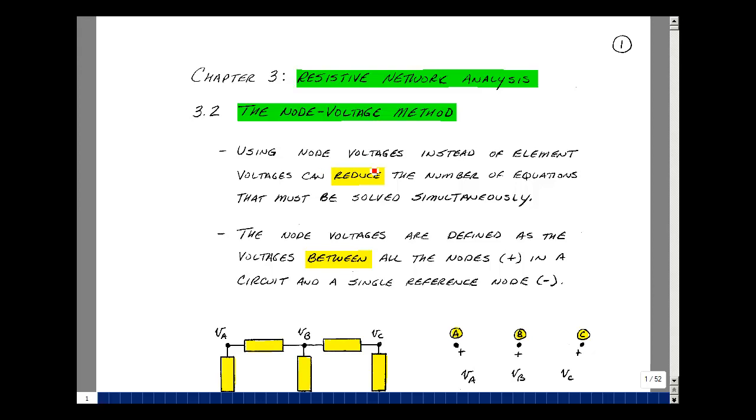Using node voltages instead of element voltages can reduce the number of equations that we have to solve simultaneously. The node voltages are defined as the voltages between all the nodes in a circuit and a single reference node. I can better show you this on a schematic.